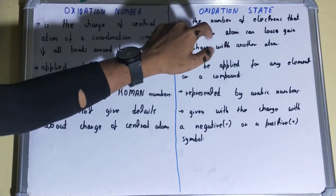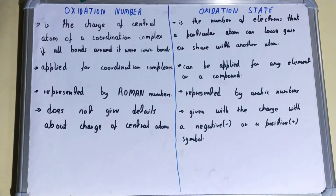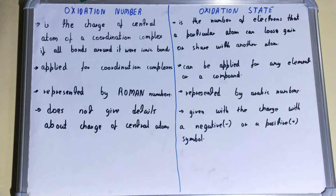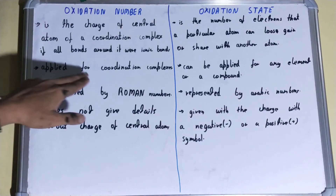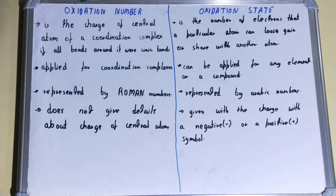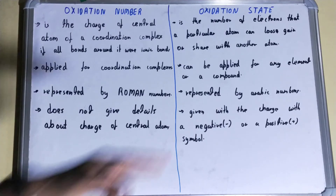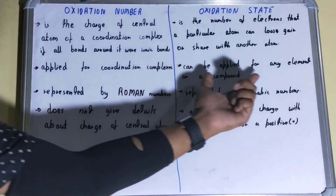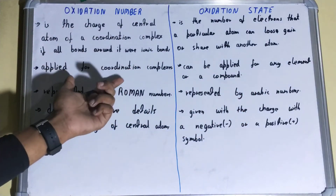But if we talk about the oxidation state, it is the number of electrons that a particular atom can lose, gain, or share with another atom. Next, if we talk about the oxidation number, it is applied for coordination complexes only. But if we talk about the oxidation state, it can be applied for any element or compound, so it is basically global.